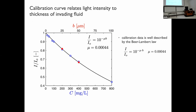Regarding the Beer-Lambert calibration: we use a shim between the two plates where we can vary the thickness, though we cannot have many data points. We also change the concentration and demonstrated that by changing both thickness and concentration you can achieve the same effect, and can use the same Beer-Lambert law calibration curve for both — and that's how we were able to get the film thickness.